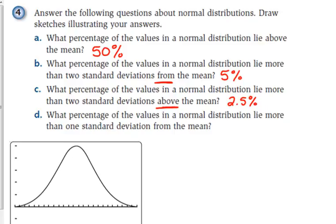B says more than two standard deviations from the mean, so that means either direction. C says more than two standard deviations above, so you're just talking about this half of it up here. So that's just the 2.5%.